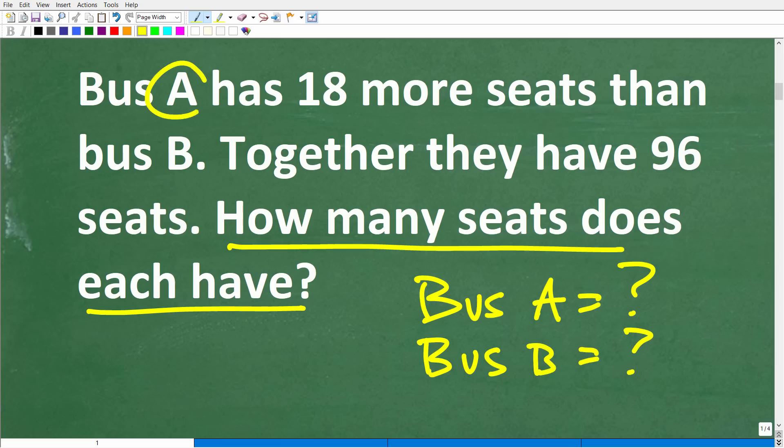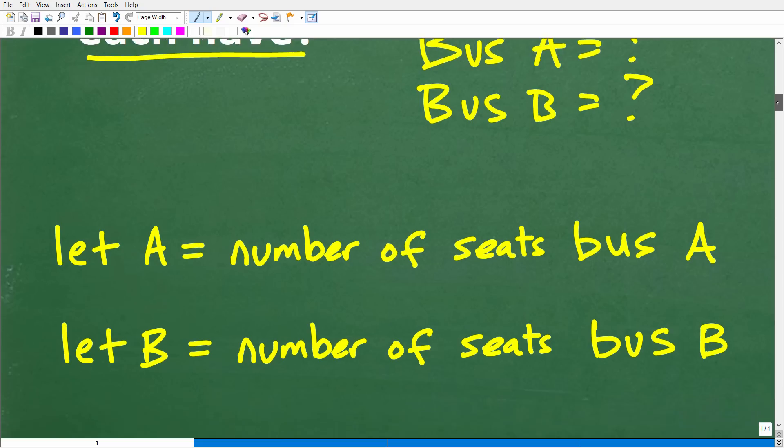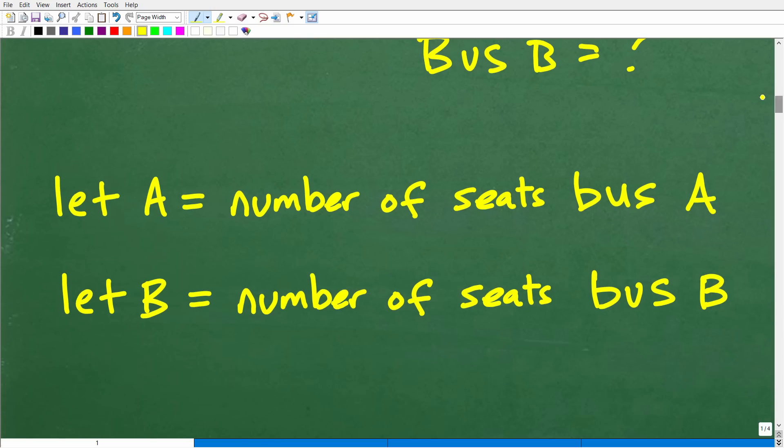Now that we understand what's going on and we're thinking about algebra, we're saying, I'm looking for how many seats does each bus have? So I'm looking for bus A, the number of seats, and bus B. Well, these are going to be two different number of seats. So we want to use two different variables to represent the number of seats bus A has and bus B has. So let's just go ahead and define that. So we'll let A equal the number of seats bus A has, and then we'll let B, this variable, represent the number of seats bus B has. Now, if we can solve for A and B, we will have solved the problem.